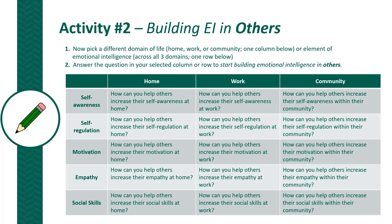Activity two: building EI in others. Pick a different domain — home, work, or community in the column — or an element of emotional intelligence in a row across all three domains, and then answer the questions in your selected column or row on how you can start building emotional intelligence in others. For instance, if I wanted to focus on motivation in others, I would answer the questions across home, work, and community. If I wanted to think about building emotional intelligence in others in the community, I would focus on the community column and answer the questions.